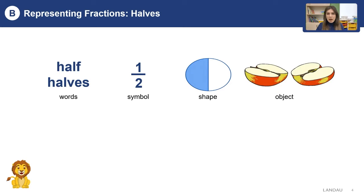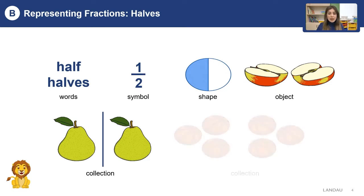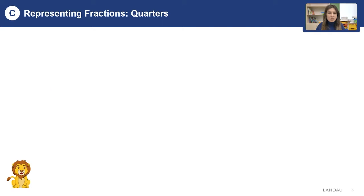Do you remember how we find the half of collections? We have two pairs and half of it is one pair. We have six balls and half of them is three balls.